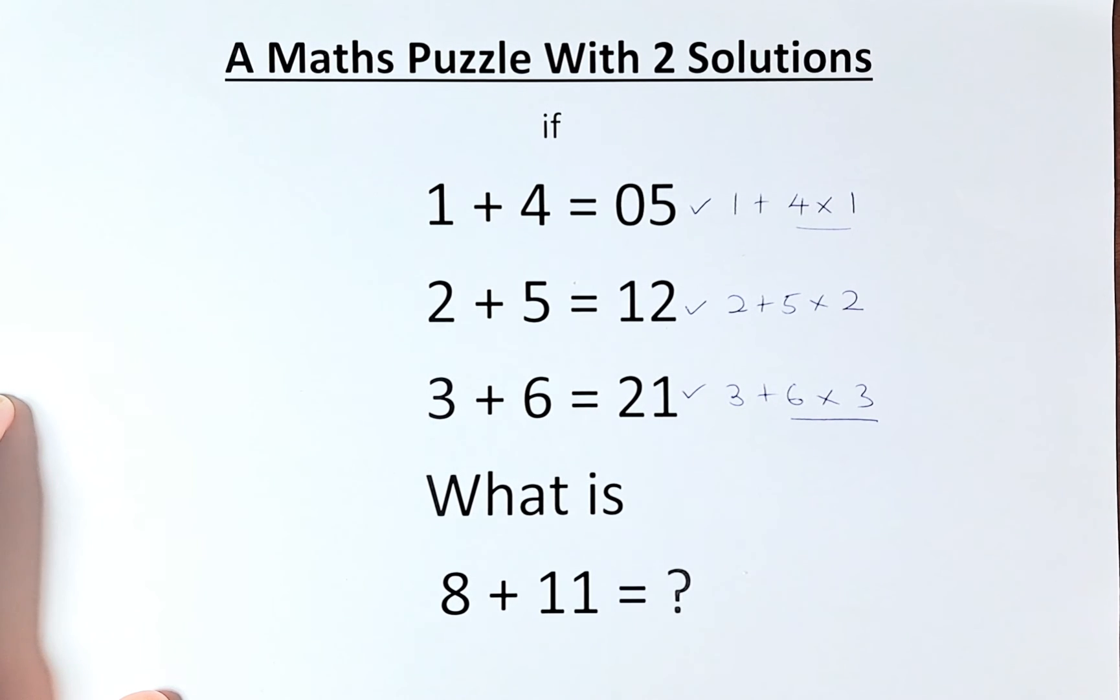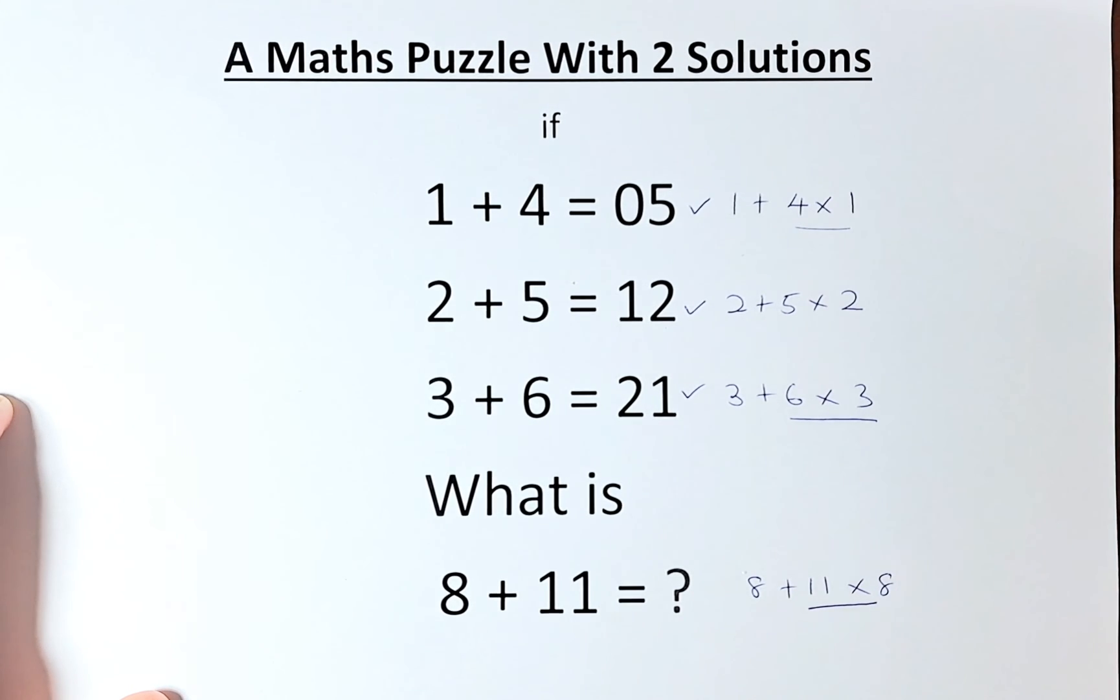So what is 8 plus 11 equals? It's going to be 8 plus 11 multiplied by 8. As usual, we do multiplication first. So 11 times 8 is 88, 88 plus 8, the answer is going to be 96.